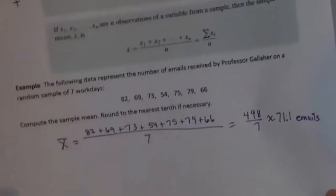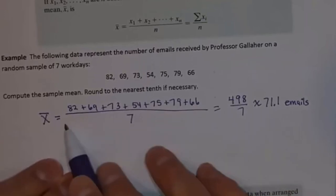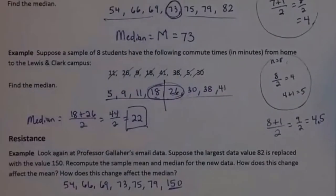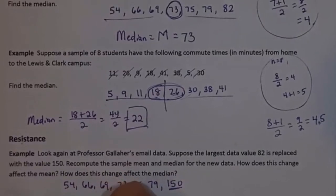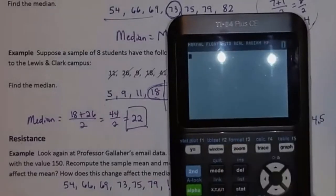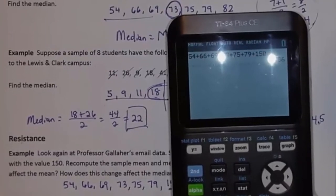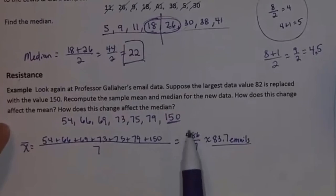Back on the previous page, we calculated our mean and found it to be 71.1, but that was using 82 instead of 150. If I recalculate now: 54 + 66 + 69 + 73 + 75 + 79 + 150 = 586. Dividing 586 by 7, because it was a sample of 7, gives us approximately 83.7 emails.